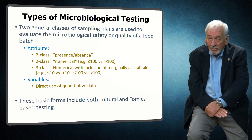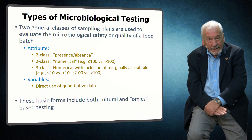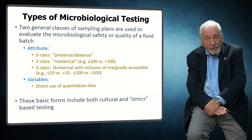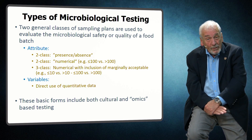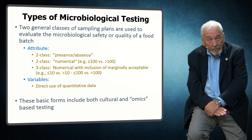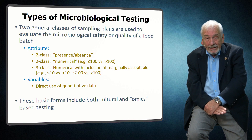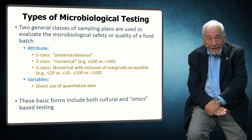In addition to two-class attribute sampling plans, three-class attribute plans provide certain advantages when working with stratified quantitative data. In three-class plans, a third marginally acceptable class is defined. In this approach, if all the samples have a level of the target microorganism that is acceptable — this number is often referred to as little m — the food batch is considered acceptable. At the other extreme, if any sample exceeds a specified upper limit, often referred to as big M, the entire batch is considered unacceptable. In between greater than little m and less than big M is the marginally acceptable class. If the number of samples in this range are less than a specified percentage of the total number of samples, the batch is considered acceptable.